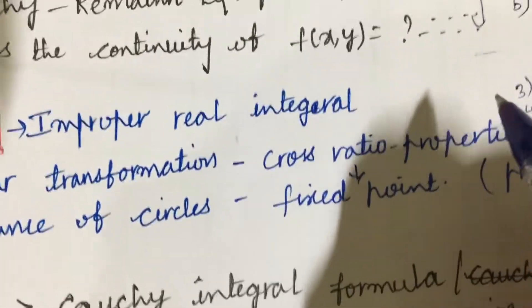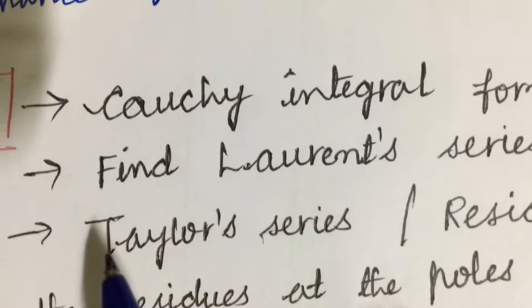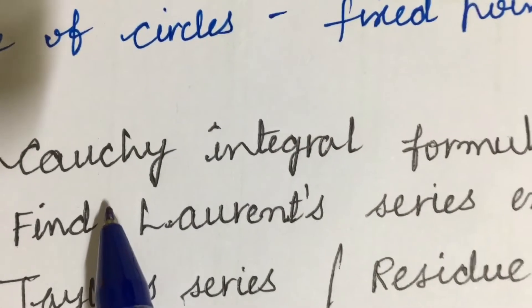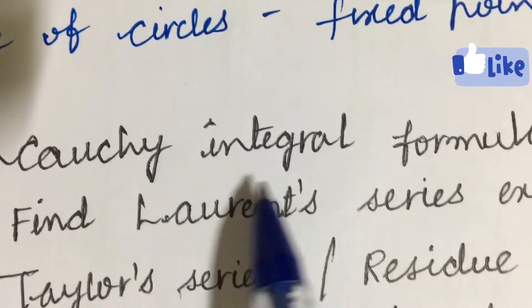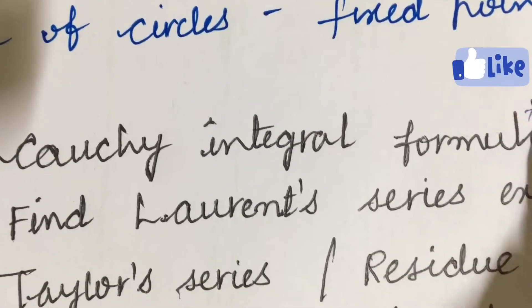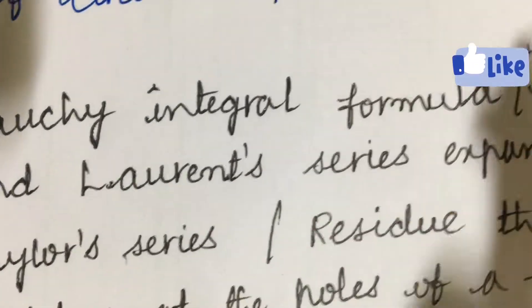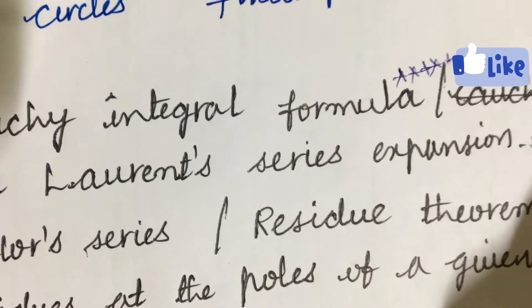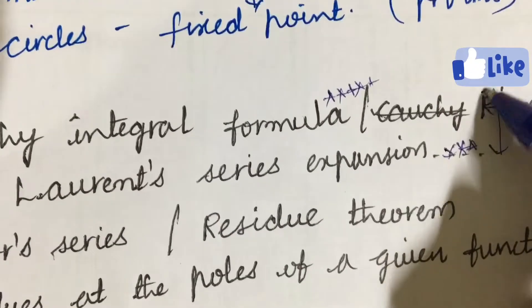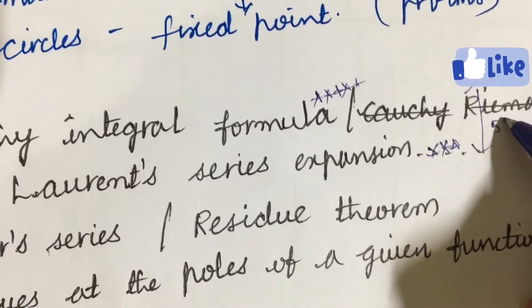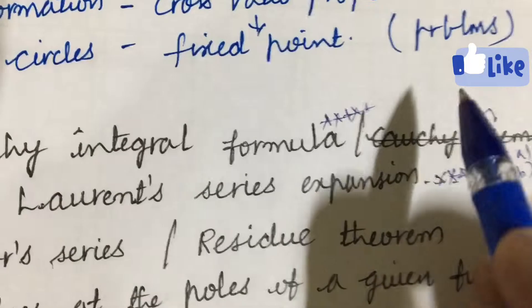Unit 2 also has two questions. The first and foremost gunshot I can give you is a problem on Cauchy integral formula, one of the very important and gunshot questions. Find Laurent series expansion may also be an important question. This is all about 5a as well as 5b from these two concepts.